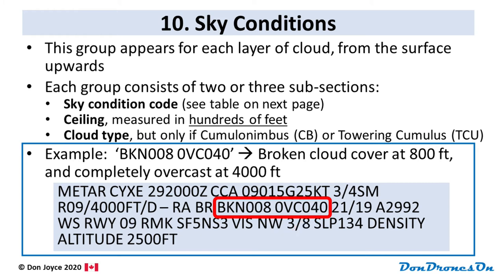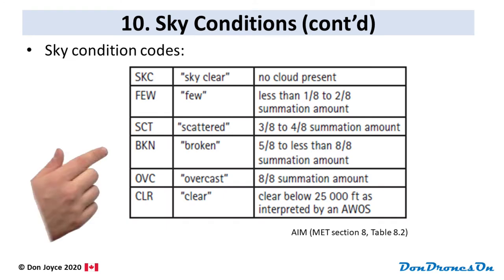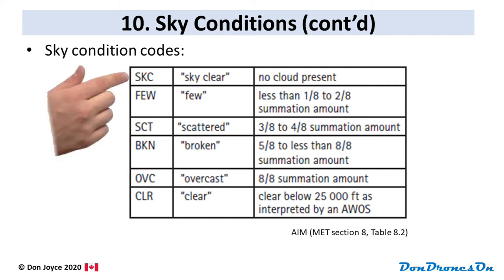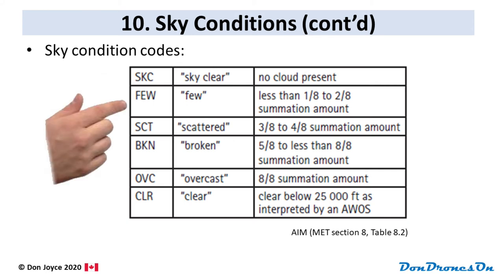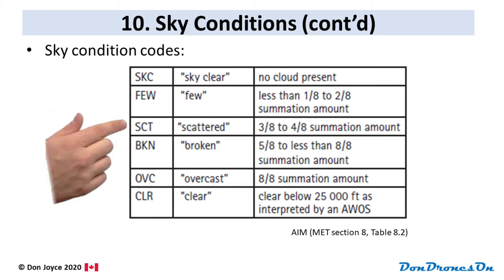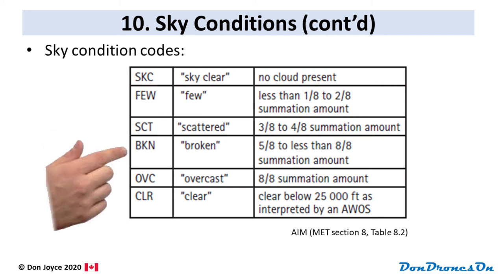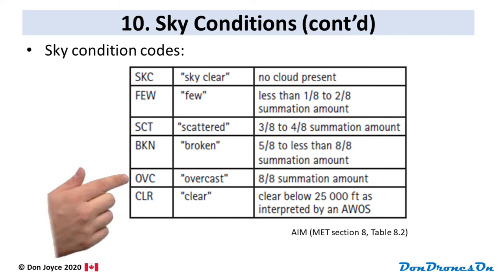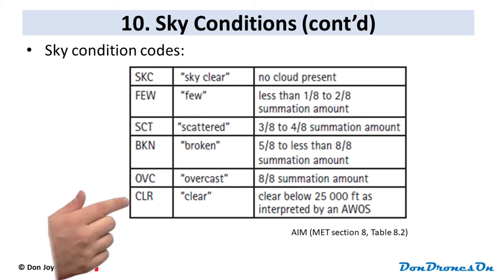Now let's look at the sky condition table. Coverage is measured in eighths of the sky, called octas. SKC means sky clear — no clouds present. FEW means one-eighth to two-eighths coverage. SCT (scattered) means three-eighths to four-eighths. BKN (broken) means five-eighths to seven-eighths. OVC (overcast) means completely covered. There's also CLR — clear below 25,000 feet as interpreted by the automatic weather system.